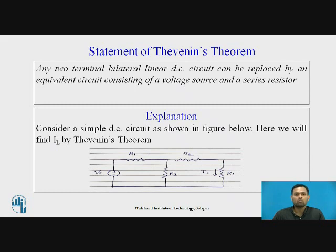The statement of Thevenin's theorem: any two-terminal bilateral linear DC circuit can be replaced by an equivalent circuit consisting of a voltage source and a series resistor. A bilateral circuit element means current can flow from any terminal, and linear indicates that the graph is linear — as the value on the x-axis increases, the value on the y-axis also increases.